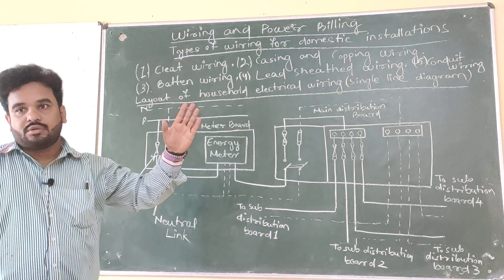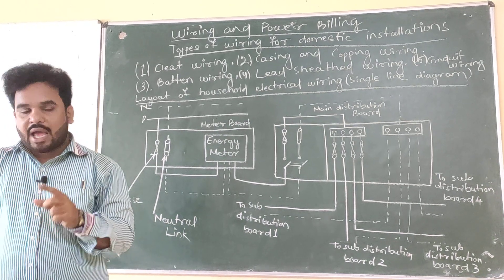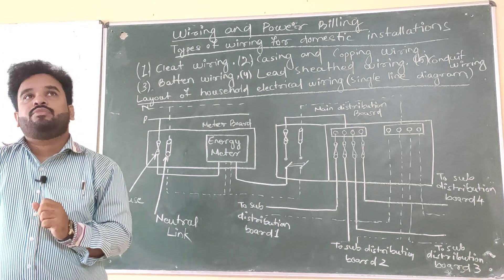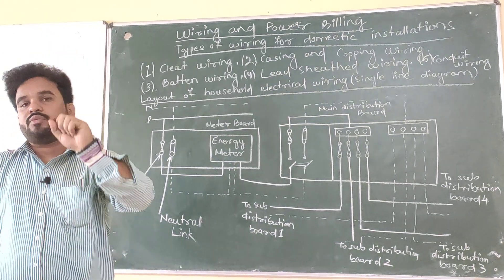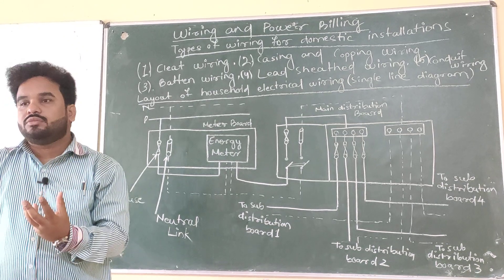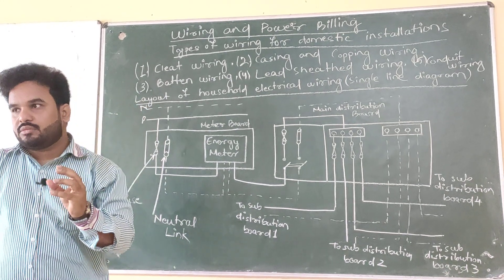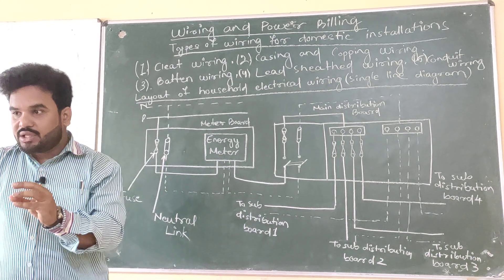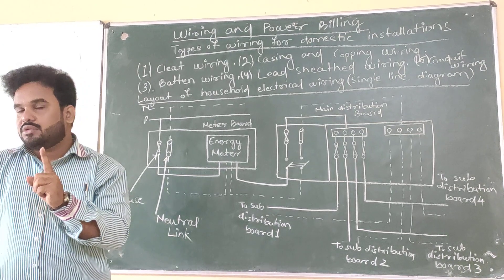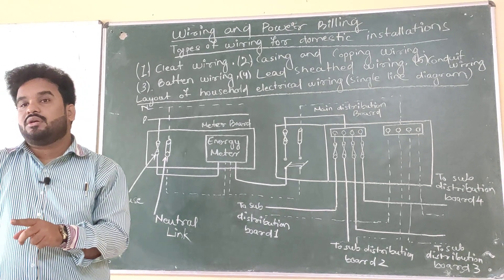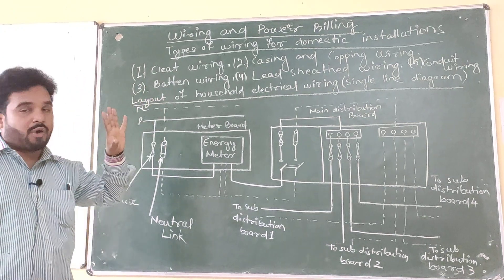Suppose I am using a 40-watt bulb — what does it mean? If it works for one hour, it will consume 40 watts. Suppose you are using a 10-watt bulb — if it is working for one hour, then it is consuming 10 watts. So then we will calculate how much money it will take. That is why we are studying wiring and power billing.